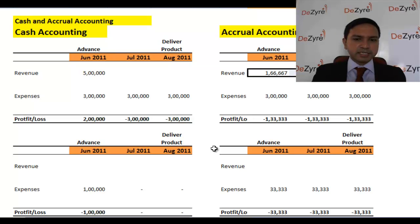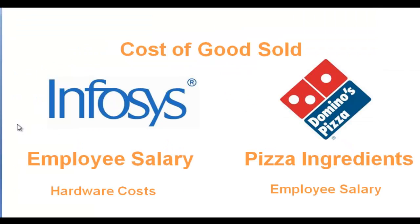There is a clear difference in what Infosys's cost of goods sold includes versus Domino's. For Infosys, the bulk of their cost of goods sold is the salary they're paying their engineers, programmers, system analysts, and team leads — because those are the ingredients that produce the product. For hardware and electricity, maybe 10% of the computer's cost or 10% of electricity goes towards cost of goods sold, and the remaining goes to the next project.